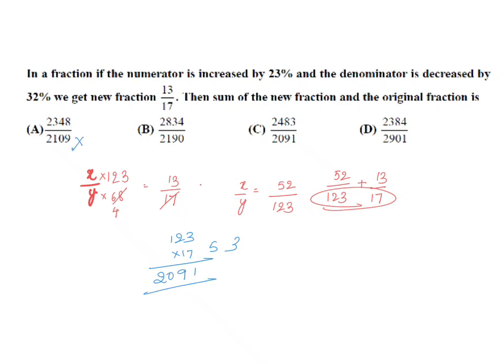2109 cannot be your answer. 2091, 2901 cannot be your answer. So by looking at the denominator you can answer. Don't waste your time by finding the numerator. This is a simple trick to eliminate. Actually, you can find your answer by taking 13 as common. But the short way is to figure out the denominator because all the denominators are different.